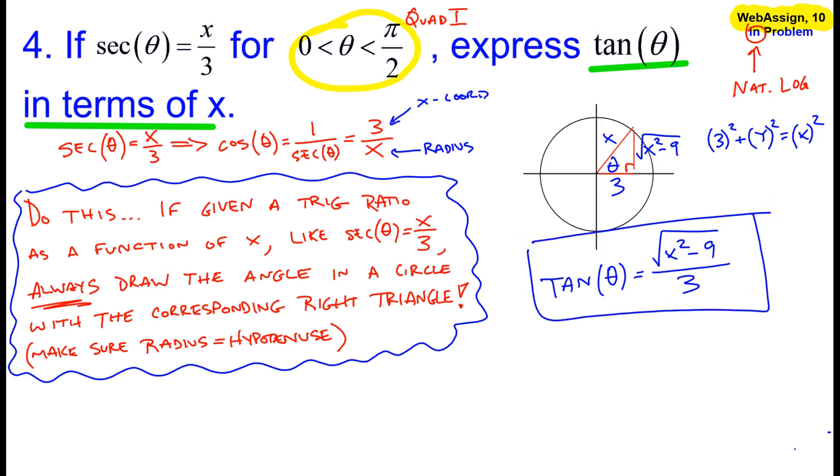Two last reminders here about this one. This is not the exact problem in WebAssign. The exact problem in WebAssign involves an input to a natural log function, but all the work I've done here, you'll be able to use for that problem. Last thing I'll say is make sure the radius of your right triangle is equal to the hypotenuse. Please keep that in mind as you're doing these problems, because if you don't have the radius of the circle equal to the hypotenuse of your right triangle, you will get an incorrect solution. Alright, that's it for example 4.